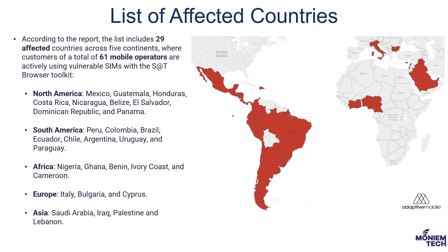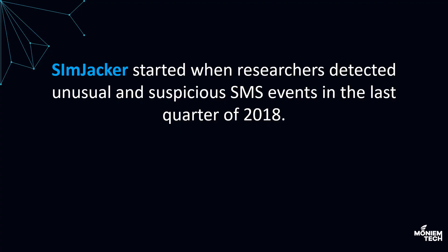According to the report, there are 29 affected countries across five continents where customers of 61 mobile operators are actively using SIM cards with the S&T browser toolkit. For North America, Mexico is one of the most affected countries. In South America: Peru, Colombia, and Brazil. In Africa: Nigeria. In Europe: Italy. In Asia: Iraq, Lebanon, Saudi Arabia, and Palestine.